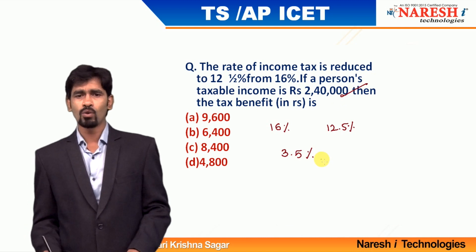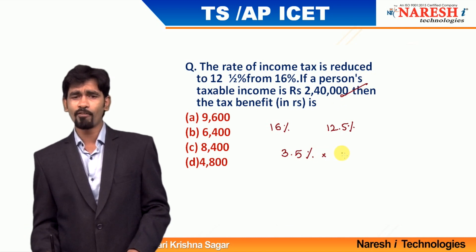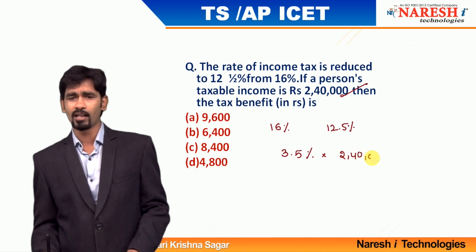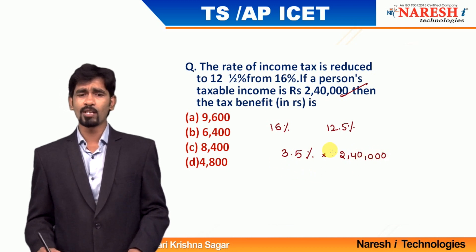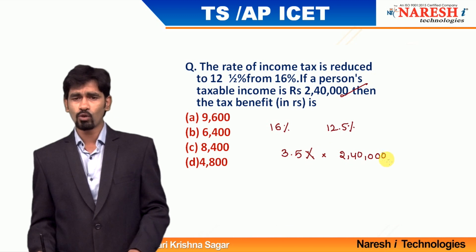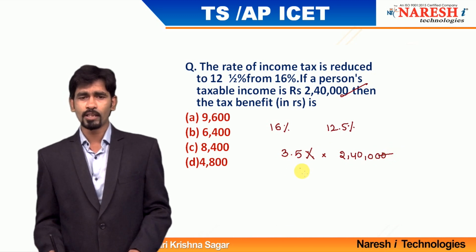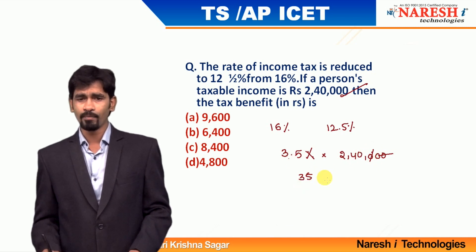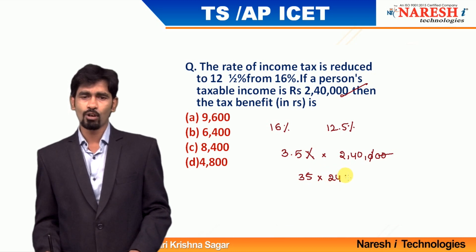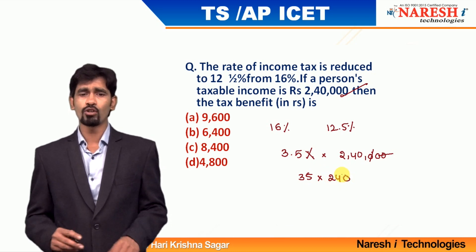What is the total taxable amount? It is 2,40,000. So, 3.5 percentage of 2,40,000 — if you calculate that, it will be your answer choice. 3.5 percentage of this: the percentage and two zeros will get cancelled. So write 3.5 as 35 divided by 10. The 10 will get cancelled with the 10, giving you 240. Solving this will give your answer choice.